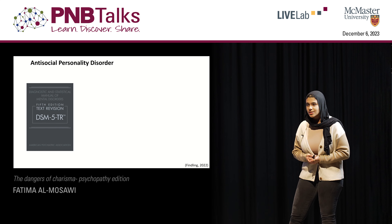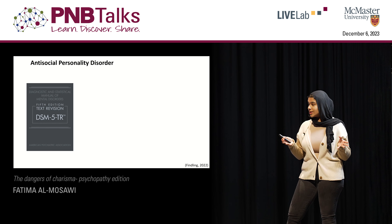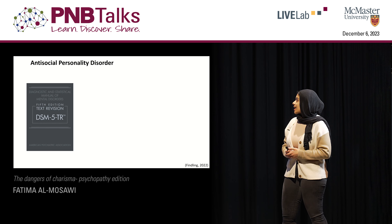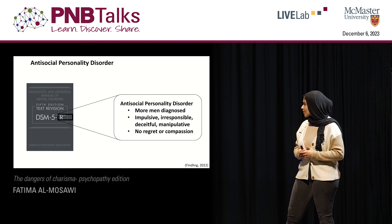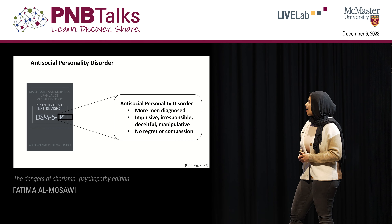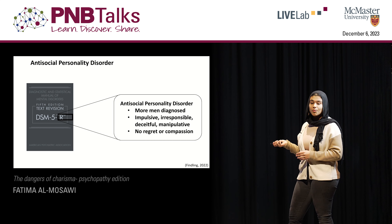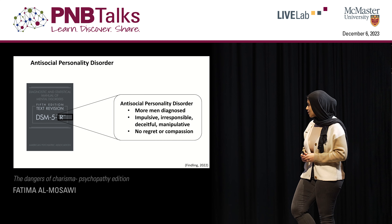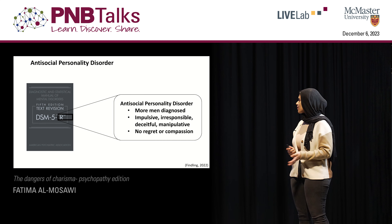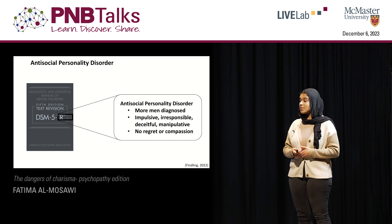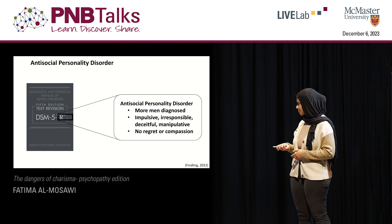The DSM-5 — the Diagnostic and Statistical Manual for Mental Disorders — is used to classify and diagnose mental illness. Within the DSM-5, there is one personality disorder termed antisocial PD. Since we're interested in understanding Tim and his behavior, we're going to focus on this personality disorder in particular. It's known that more men are diagnosed compared to women. Some traits to know include impulsivity, irresponsibility, deceitfulness, and manipulation. They also show no regret or compassion towards other people.